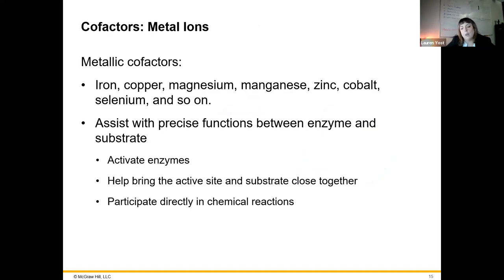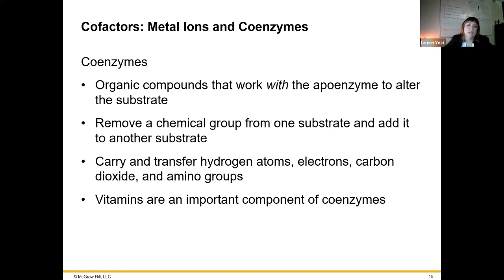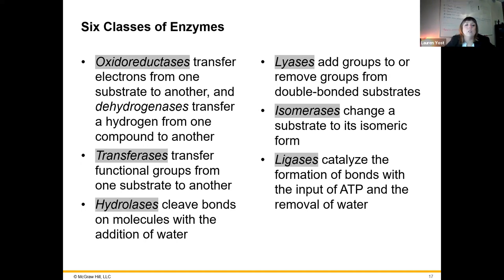Metallic ions sometimes serve as cofactors that help enzymes function. These often include iron, copper, magnesium, manganese, zinc, cobalt, and selenium, among others. They participate directly in the chemical reactions involved in working on the substrate. Coenzymes are those organic molecules — often vitamins — that can transfer hydrogen atoms or electrons, or remove whole groups from chemicals and add them to another substrate. There are six classes of enzymes overall: oxidoreductases, transferases, hydrolases, lyases, isomerases, and ligases.